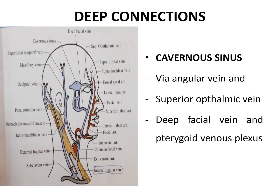Now we will see about the deep connections of the facial vein. Via the deep facial vein, the facial vein is connected to the pterygoid venous plexus, and from the pterygoid venous plexus, via the emissary vein, it is connected to the cavernous sinus. The facial vein is also connected to the cavernous sinus through the angular vein and the superior ophthalmic vein.